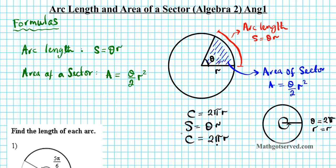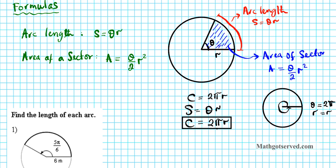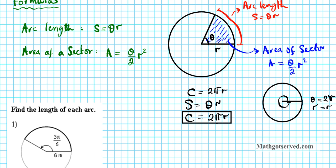The same also goes for the area of a circle. You know that elementary geometry formula for the area of a circle — maybe from middle school — A equals pi r squared. Well, it's the special case of the area of a sector formula also.